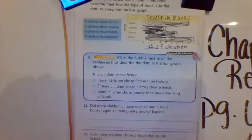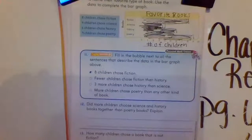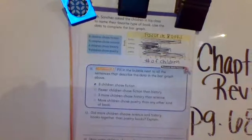Three more children chose history than science. So history was 6, and science was 4. No, it would only be 2.